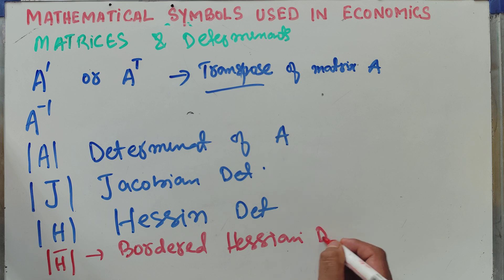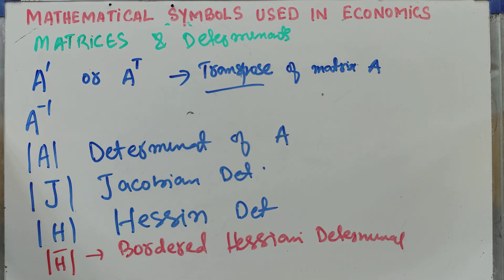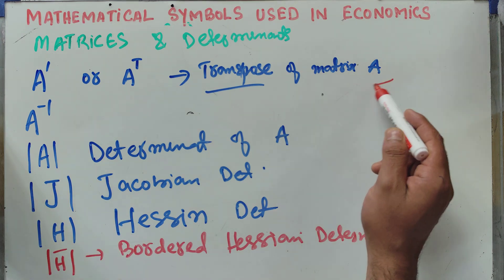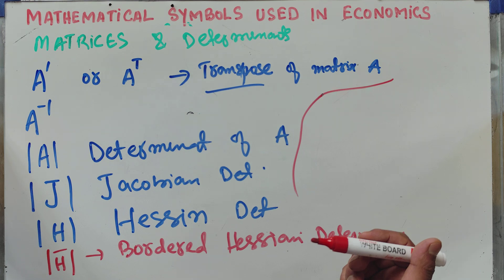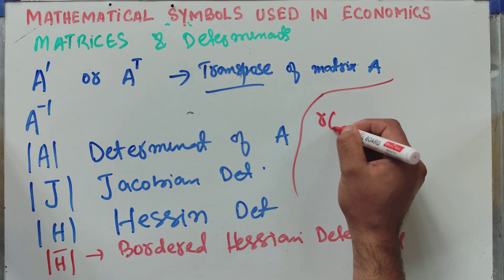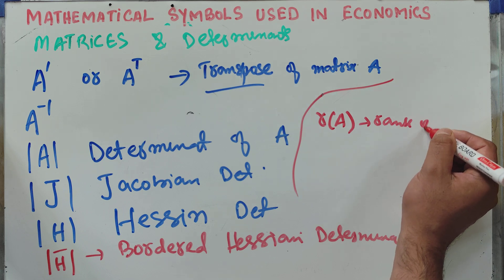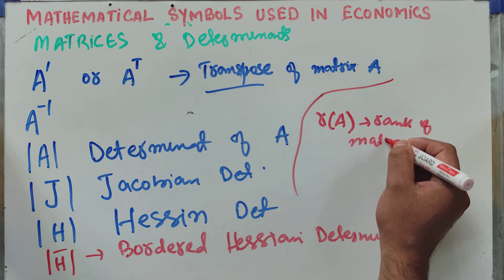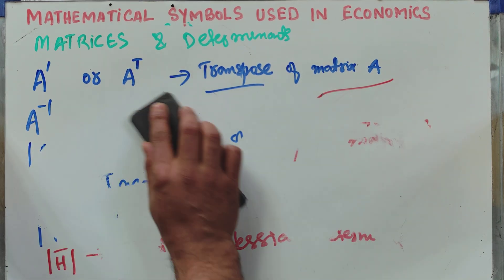I have shown all of these in my channel — where we use the Hessian, Jacobian determinant, simple determinant, what is meant by transpose, and inverse matrices. We also have the symbol for the rank of a matrix.